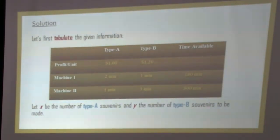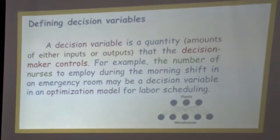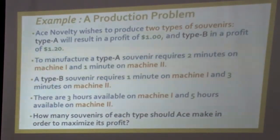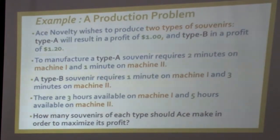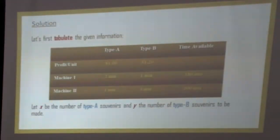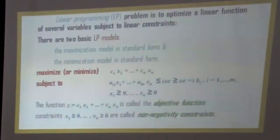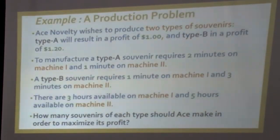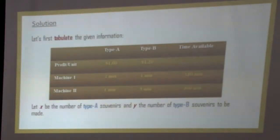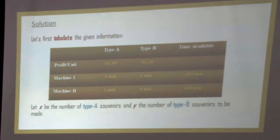Let us tabulate the given information for the problem. Two types of products are being manufactured using two different machines. Type A yields a profit of $1 and Type B a profit of $1.20. The two product types and time availability are given column-wise, while the two different machines (1 and 2) and profit are given row-wise. The values in the cells relate to both products and machines.